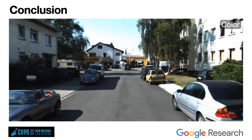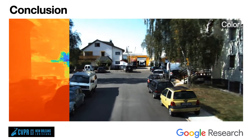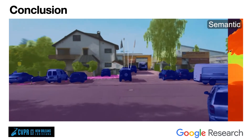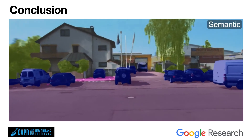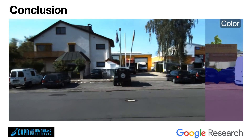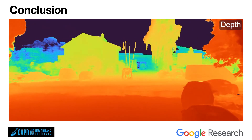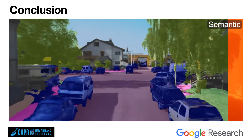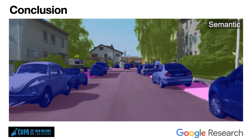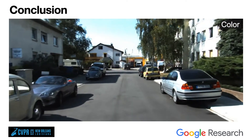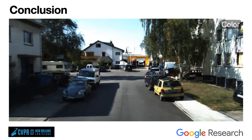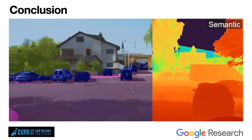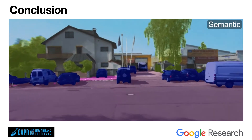We presented an object-aware semantic neural scene representation which we call Panoptic Neural Fields. Panoptic neural fields can be queried to obtain density, color, semantic, and instance label of any 3D point over time. We demonstrated that we can learn panoptic neural fields of dynamic 3D scenes from images alone. We think this work will be useful for several 3D scene understanding applications.